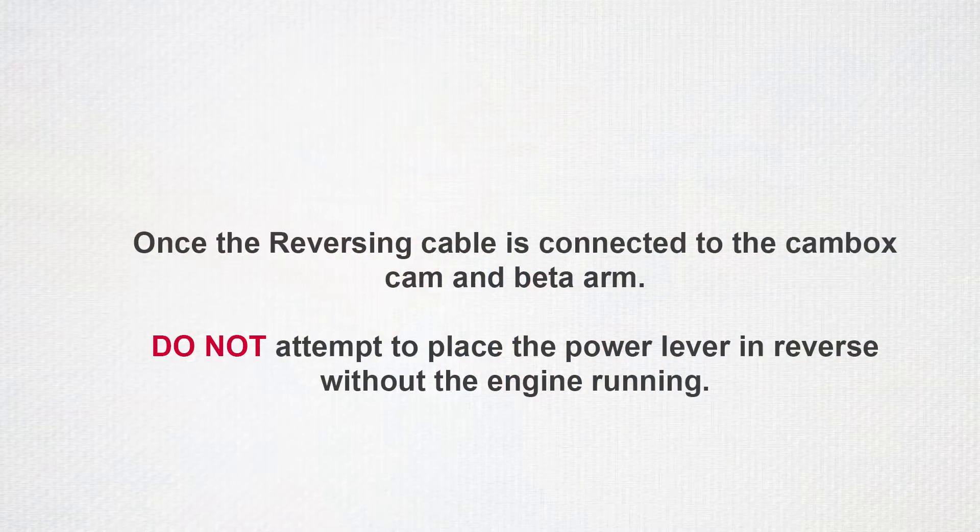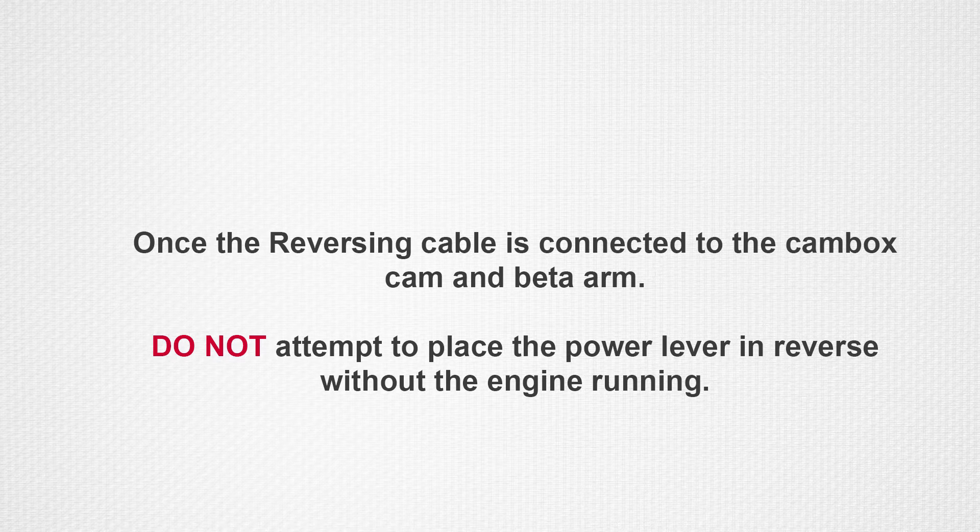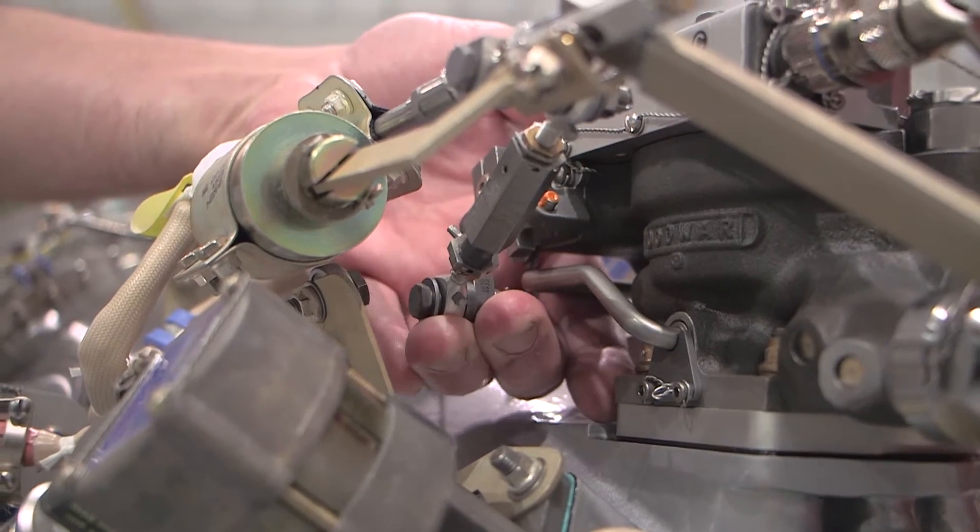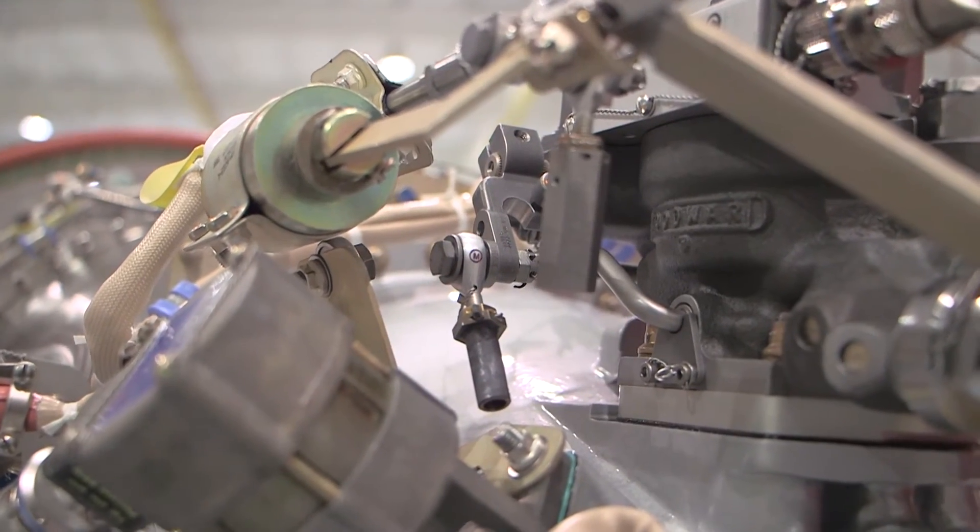Once the reversing cable is connected to both the cam box cam and the beta arm, do not attempt to place the power levers in reverse without the engine running as this will cause damage to the reversing linkages. Remove the fuel topping or NF link from the primary governor NF arm and the reversing cable.